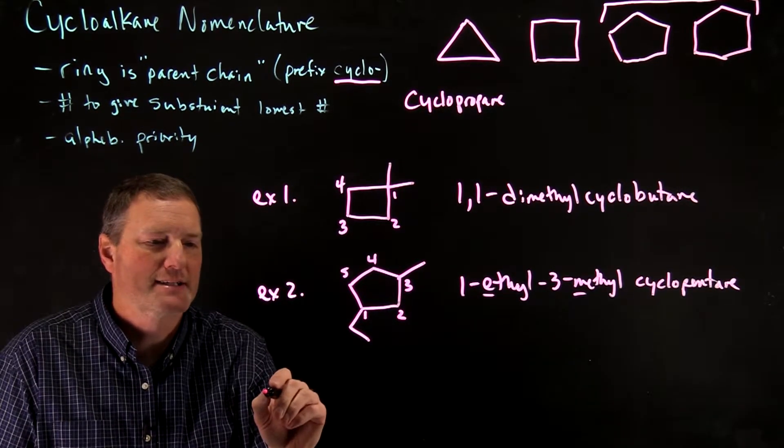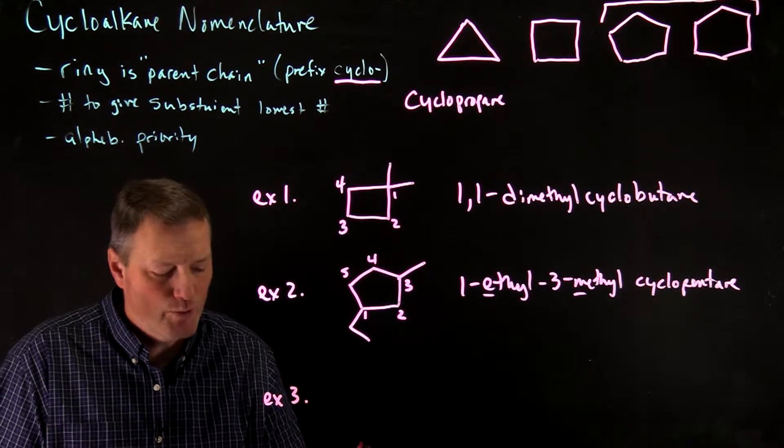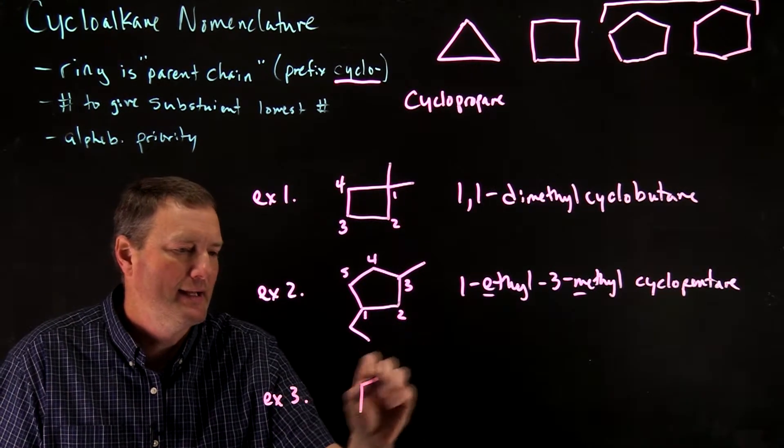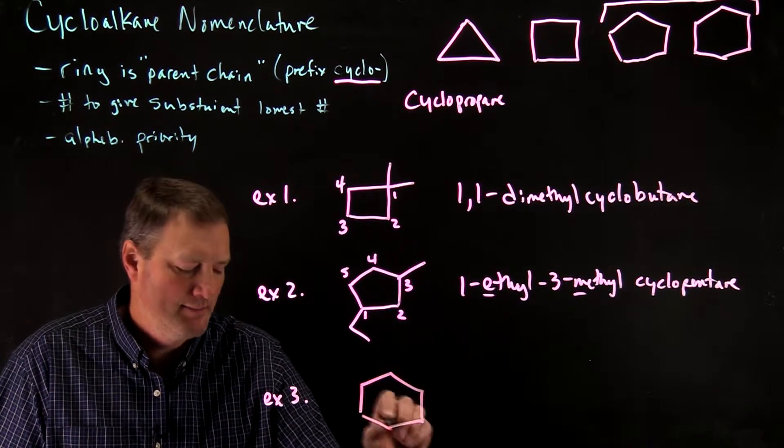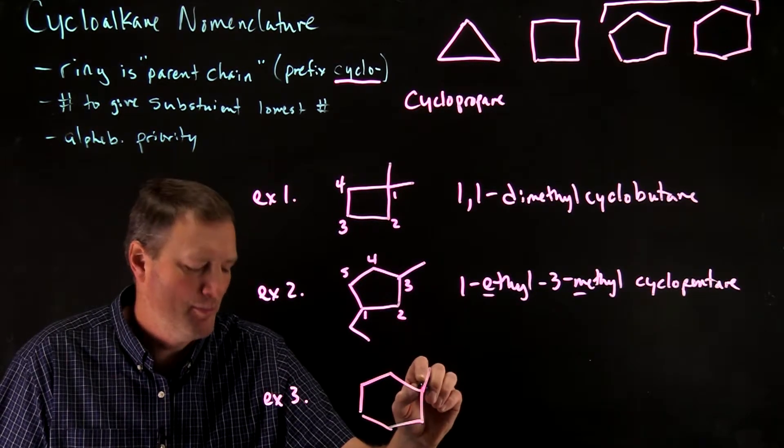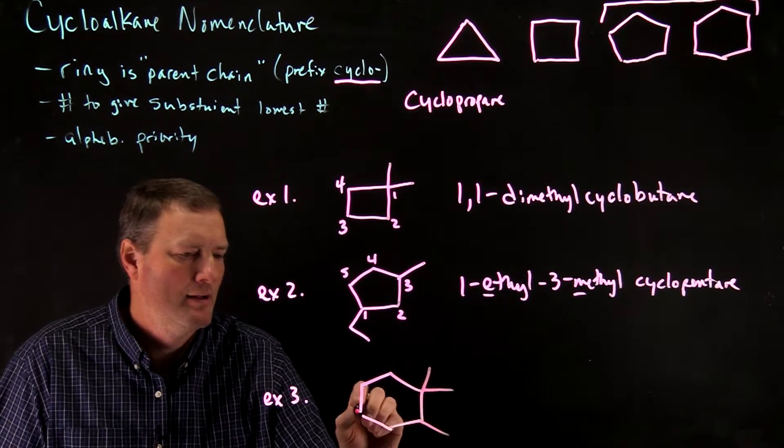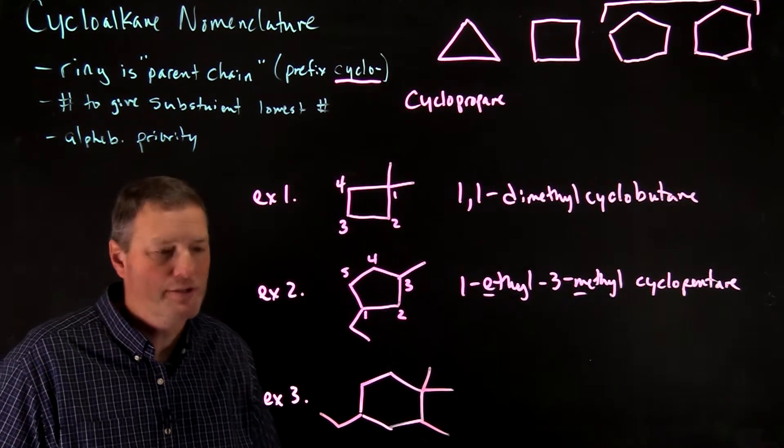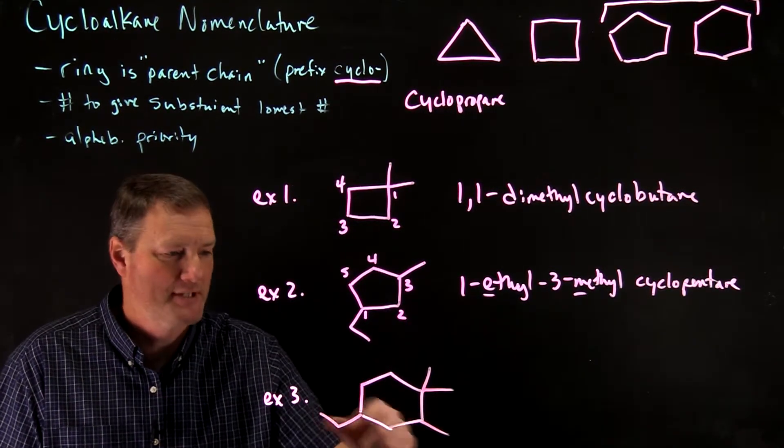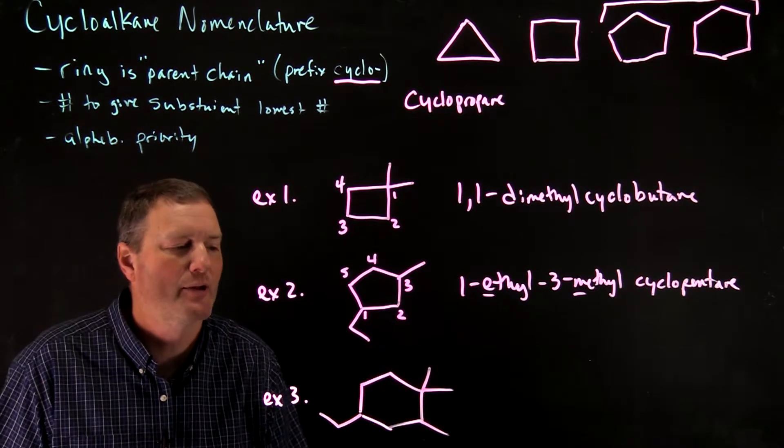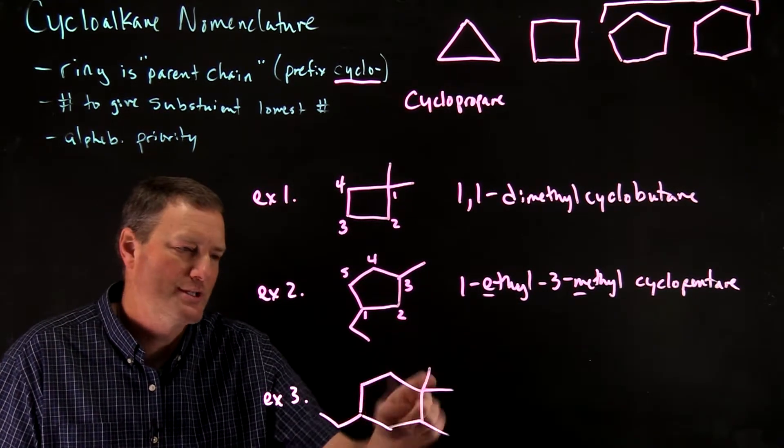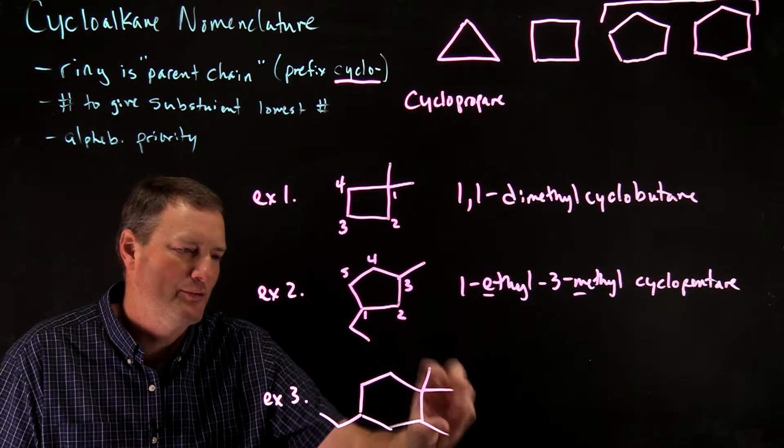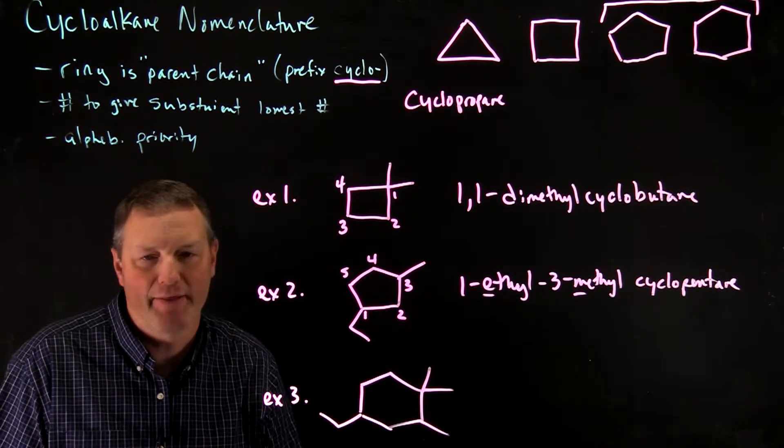Let's look at the last example here. Example 3. Let's do one that's got a cyclohexane in it, and we'll do one that's a little bit more complicated here. So in this molecule, six carbons in the ring, so this will be a cyclohexane. But we have multiple substituents here. We have one, two, three methyl substituents, and then we have an ethyl group.